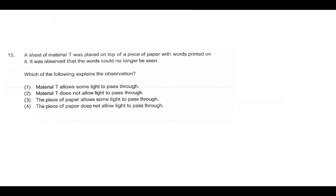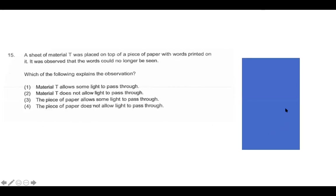A sheet of material T was placed on top of a piece of paper with words printed on it. It was observed that the words could no longer be seen. So let's imagine we have a piece of paper with some words, and then we have material T on top. So material T allows light to pass through. Well, that's not true, because if it did, then we would be able to see words on the bottom. So number one is not true. Material T does not allow light to pass through. Well, that would make sense, because if material T is stopping light from passing through, then we can't see what's written underneath. Number three, a piece of paper allows some light to pass through. The piece of paper is at the bottom, so that doesn't really affect whether we can see or not, because we have material T on top of it. And that's the same for number four. We're not talking about the piece of paper on the bottom.